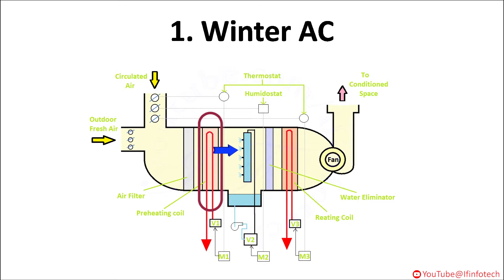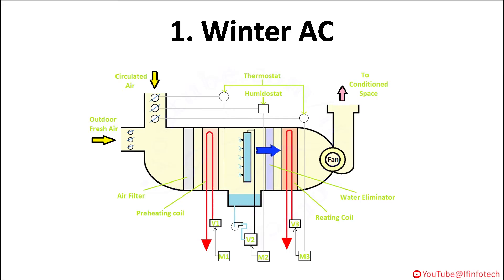Relative humidity is then increased again by the spray chamber. In the spray chamber, air is passed through a spray type humidifier where air humidity is increased up to the required condition. This produces effective cooling by combining the natural process of evaporation of water with air. The relative humidity of air is controlled by controlling the quantity of water spray in the humidifier. Air is then passed through a water eliminator where water droplets are removed before supplying air to the air conditioning space.